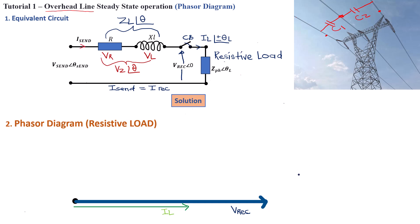The next thing is to deal with the voltage drops. The first one is VR. This voltage drop is caused by the sending end current crossing the resistance — which equals the receiving end current. Since R is purely resistive, VR is also going to be in phase with your receiving end voltage. Then you need to draw the voltage drop through the inductor on the transmission line. This voltage drop VL is going to be perpendicular to VR and VREC because it is 90 degrees out of phase. From the origin, you draw your VL.